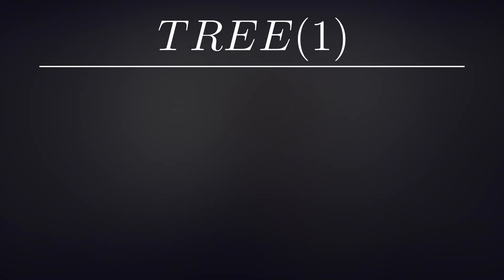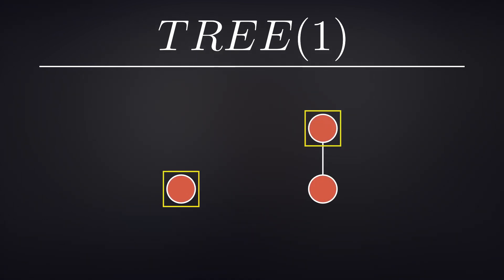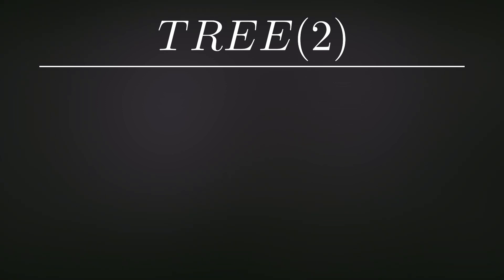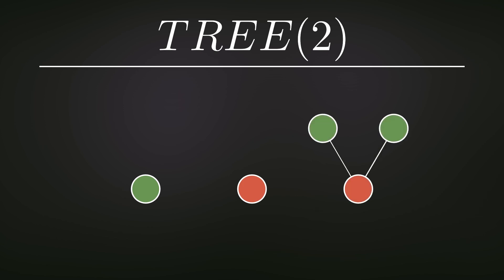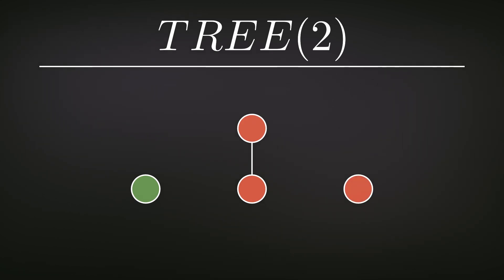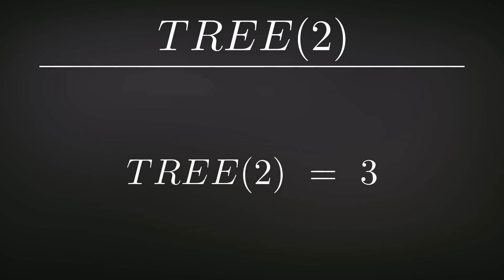For the function tree of n, we get n colors of seeds to work with, and tree of n is the maximum number of trees in the sequence we can make with n colors. Tree of 1 is 1, because we only have one color, and if we try to make another tree, that tree contains the first. For tree of 2, we have two colors, so we can have a green dot, then just a red dot. But if we try to go further, each tree contains one of the previous — however, if we first use two red dots to make a tree, then we can have three trees, because the third does not contain the previous. So tree of 2 is 3.